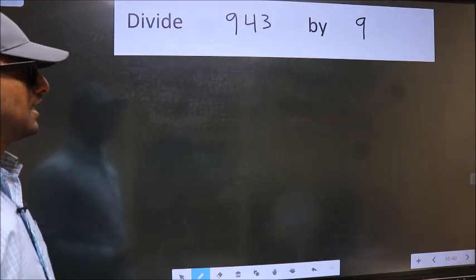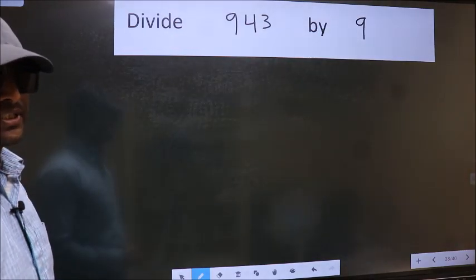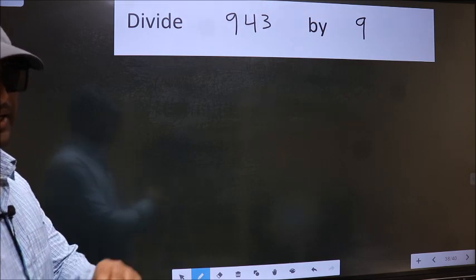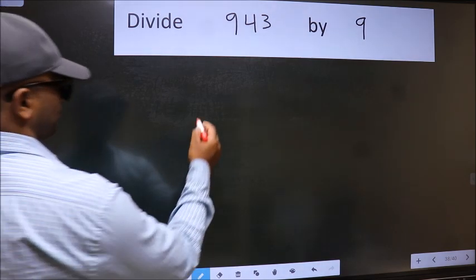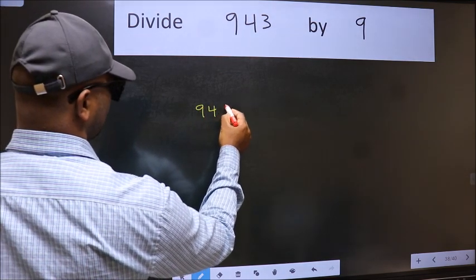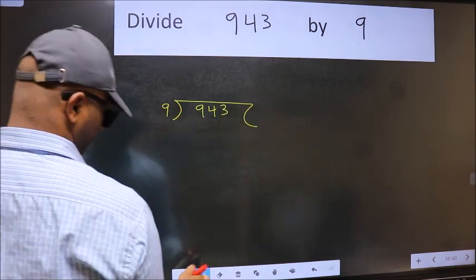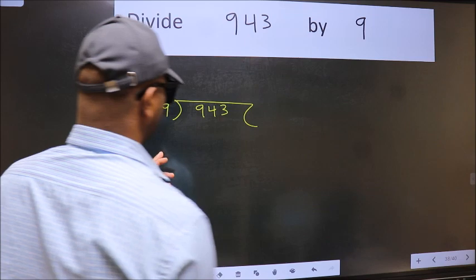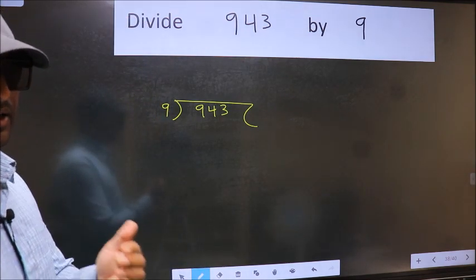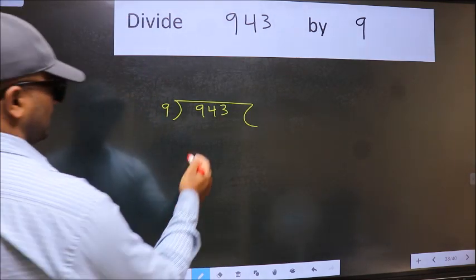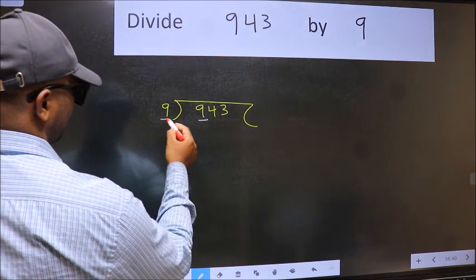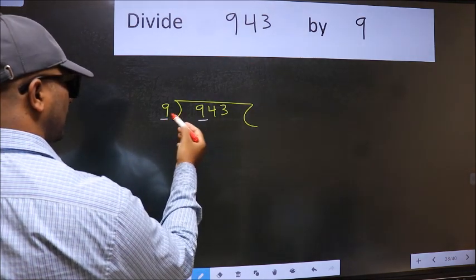To divide 943 by 9, we should frame it this way: 943 here and 9 here. This is step one. Here we have 9 and 9. When do we get 9 in the 9 times table?